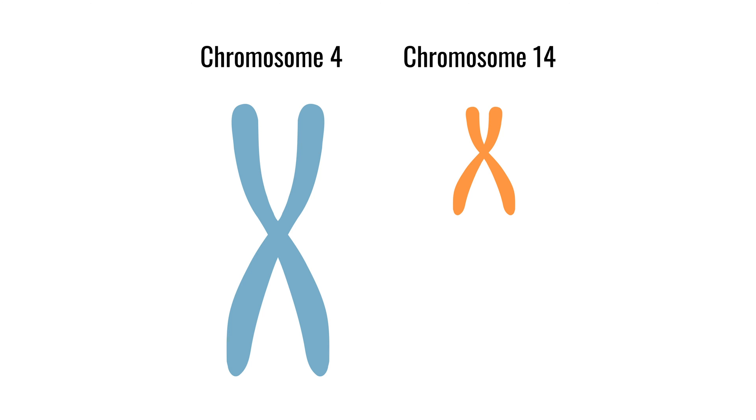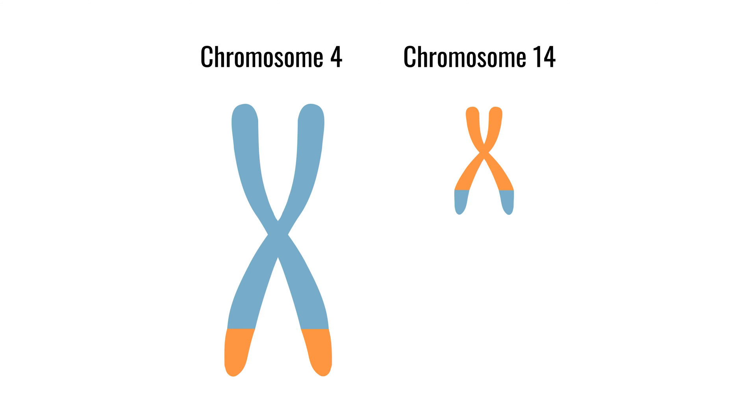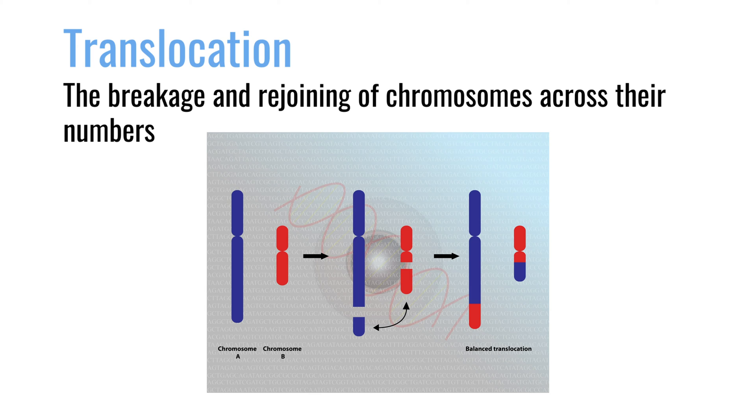But imagine if chromosome 4 breaks, and so does chromosome 14. When they rejoin, they rejoin a piece of 4 with a piece of 14 — they didn't join in the right combination. You end up with what we refer to as a 4-14 translocation. A chromosomal translocation is the breakage and rejoining of chromosomes across their numbers — 4-14, 11-14. This can be a problem because it starts putting genes together in novel combinations that change how they function, sometimes causing a cell to divide.